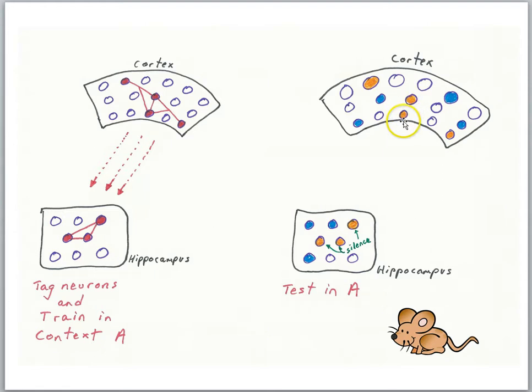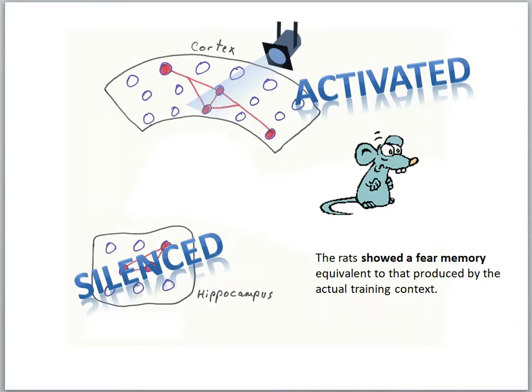So even just the natural cue of being put back in the chamber is not enough to reactivate these cortical cells. It looks like you need the hippocampus to help the cortical cells get reactivated. But then we saw another study where they went ahead and just directly stimulated those cortical engram cells and the rat did show the memory.